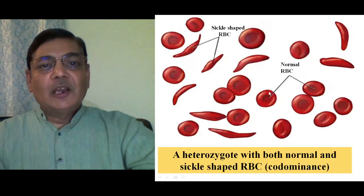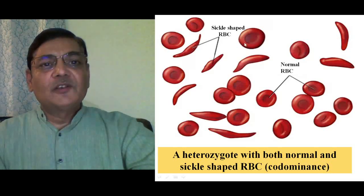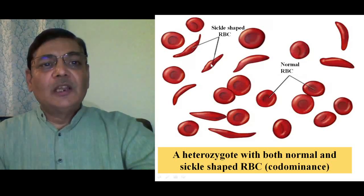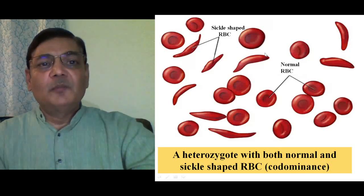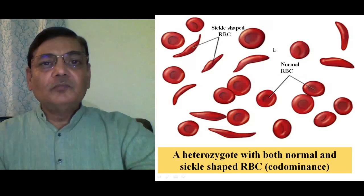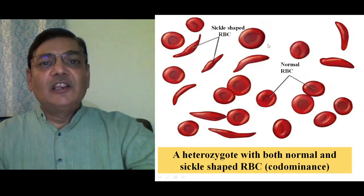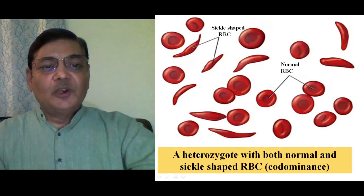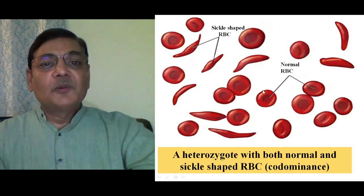Heterozygous individuals in the population will have both types of cells in their blood — their RBCs will be normal as well as sickle-shaped. You can say 50% of the RBCs will be normal and 50% will be sickle-shaped. This is a condition we can call co-dominance, where both phenotypes are expressed. HbA forms the normal RBC and HbS forms the sickle-shaped one, so it is a heterozygous condition in which both types of red blood corpuscles can be seen.